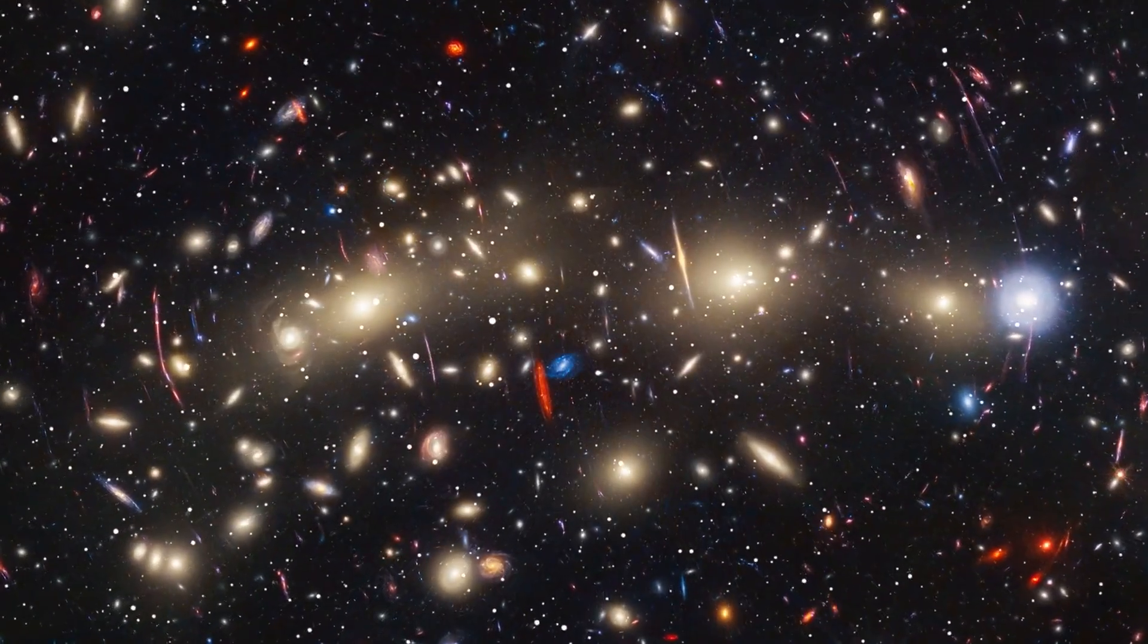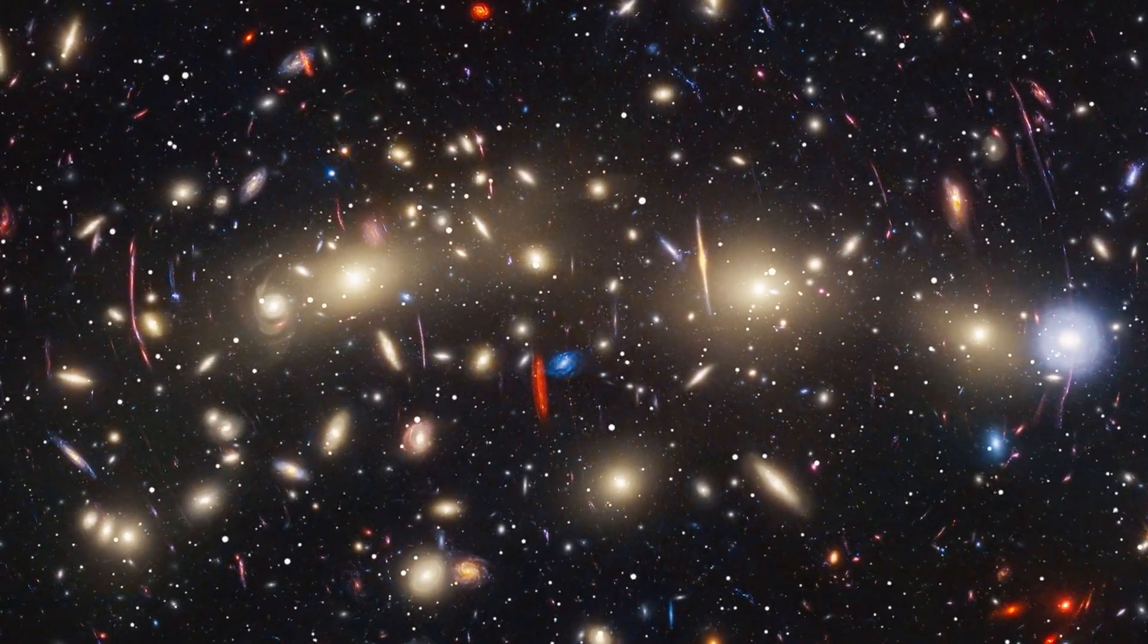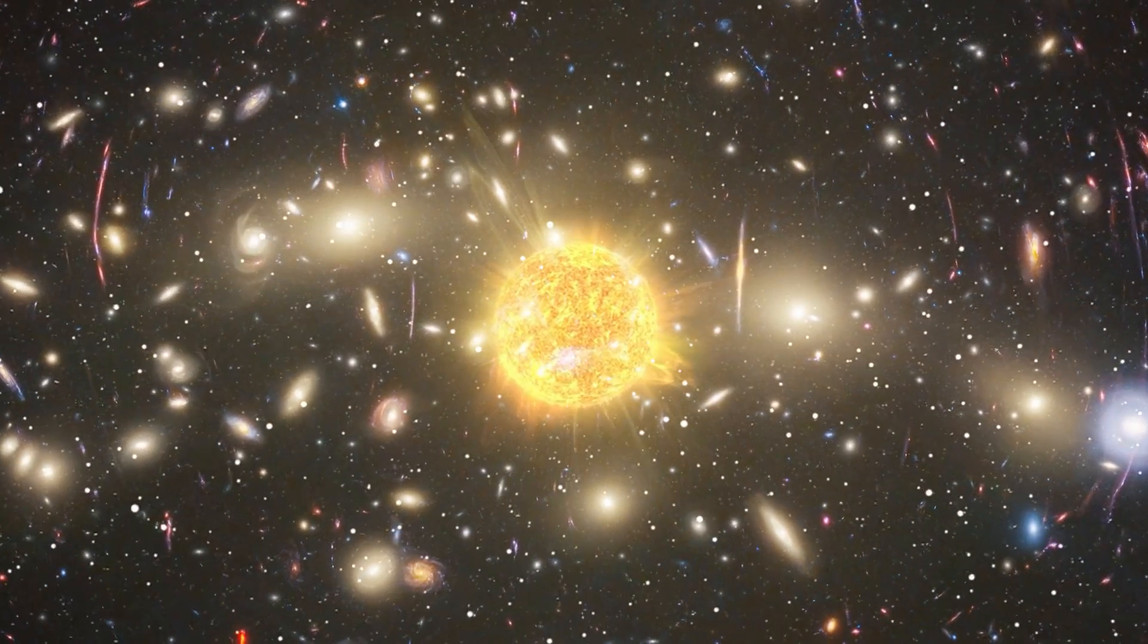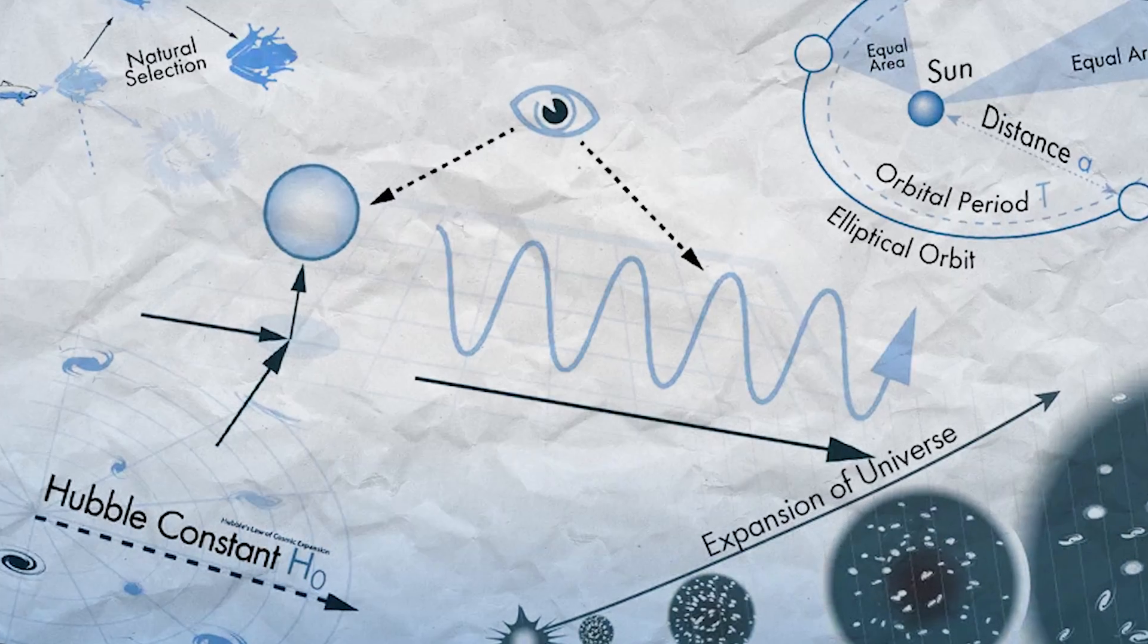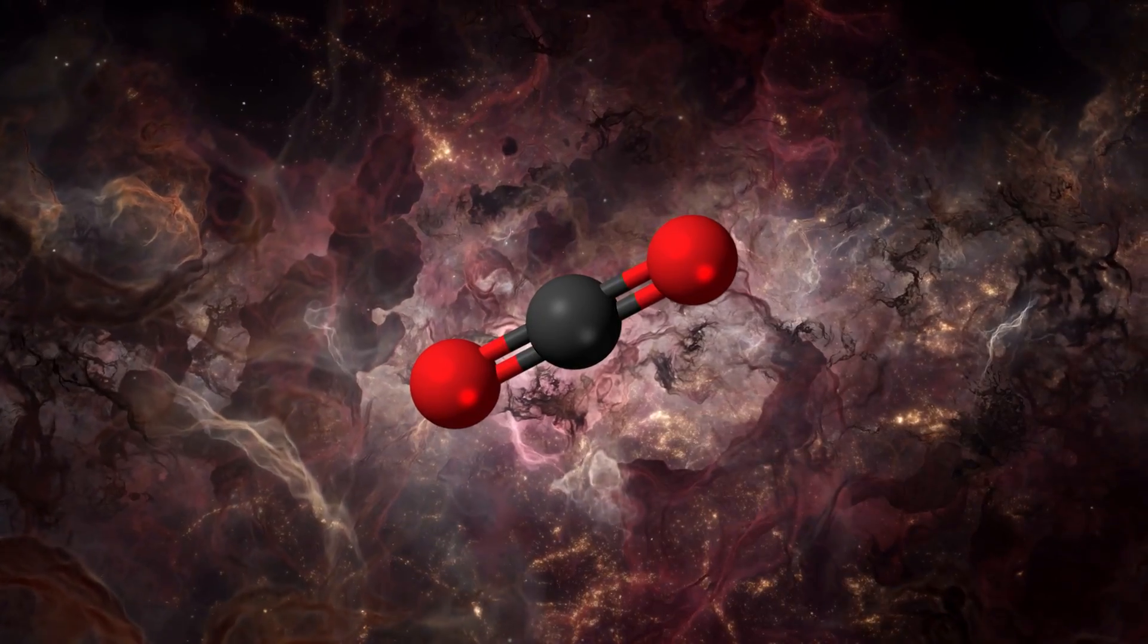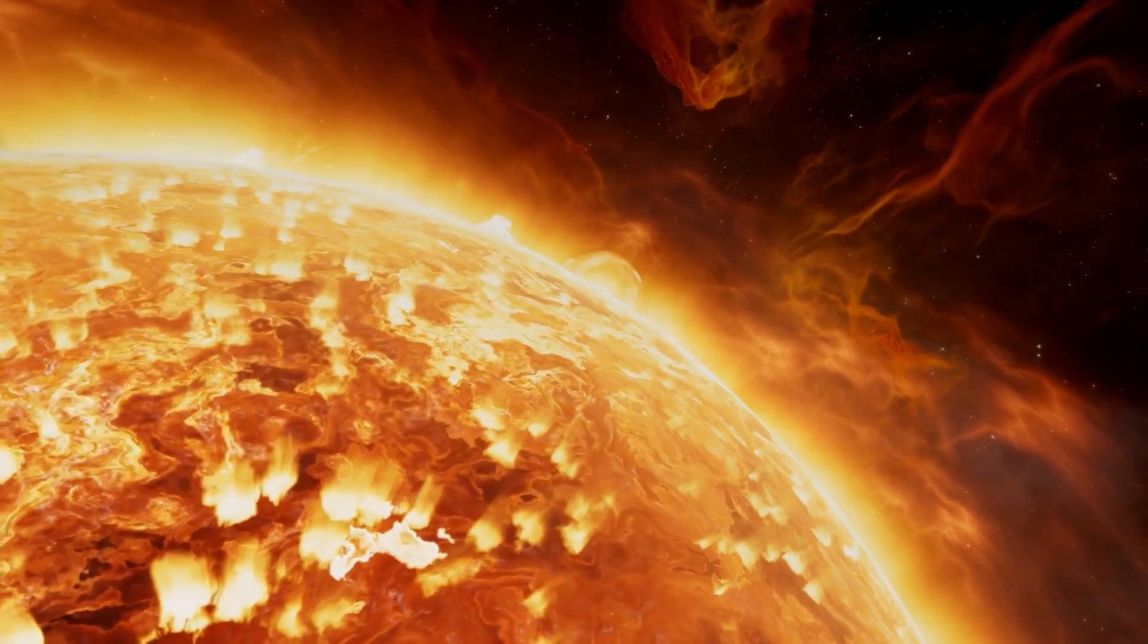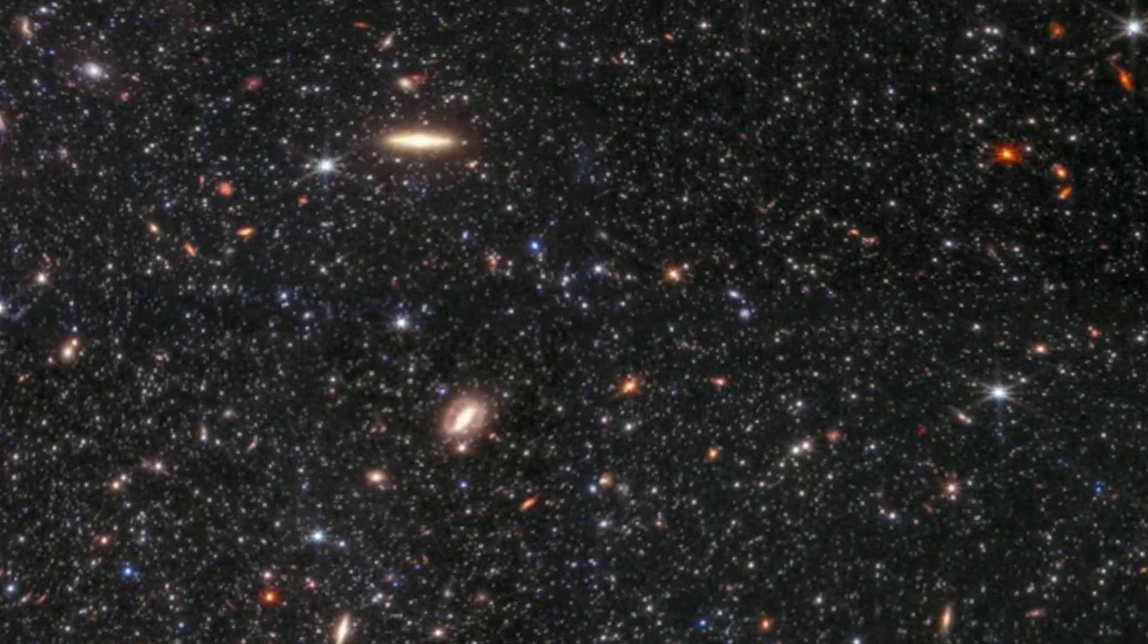This has scientists scrambling to rewrite the textbook on galaxy formation. They need to figure out how gas chilled out and turned into stars so quickly, and how these early galaxies managed to bulk up so fast. It's possible there are even new physical laws at play in the young universe that we haven't even considered yet. Another head-scratcher is the presence of heavy elements in these early galaxies. These elements are cooked up inside stars and scattered around by exploding stars. But if these galaxies are so young, how did they have time to make all that metal?